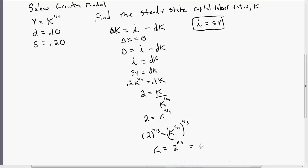Leaving us with K equals 2 raised to the four-thirds. That's a three there. And this will then simplify down to 2.52. So that is the steady-state capital labor ratio. Capital per worker.